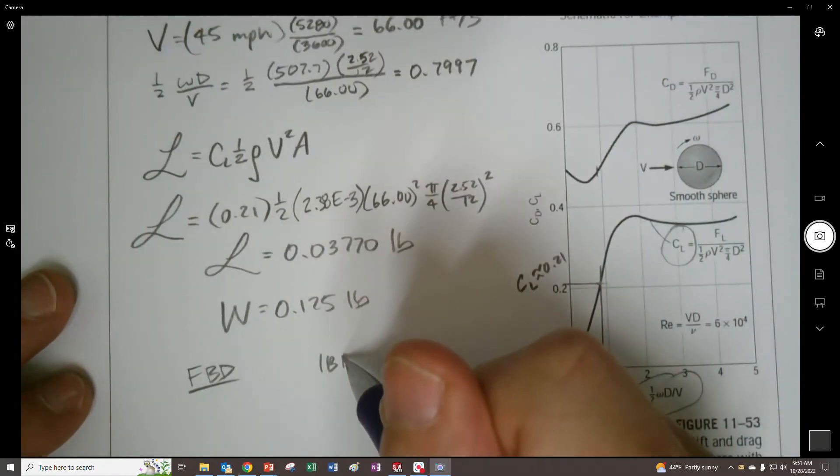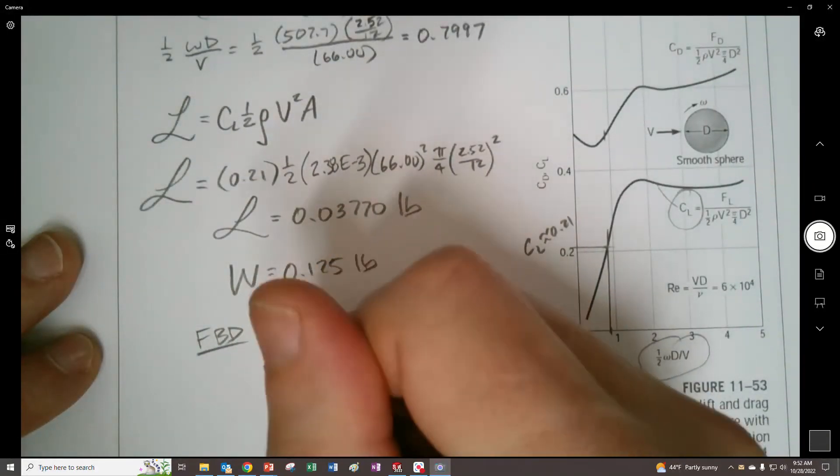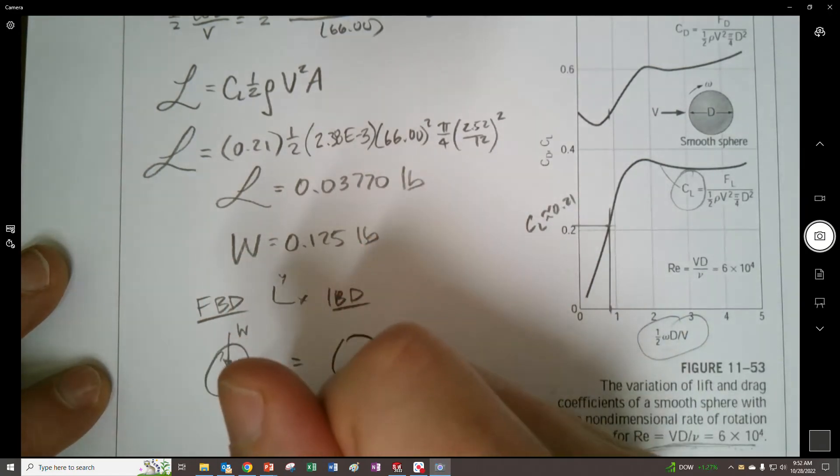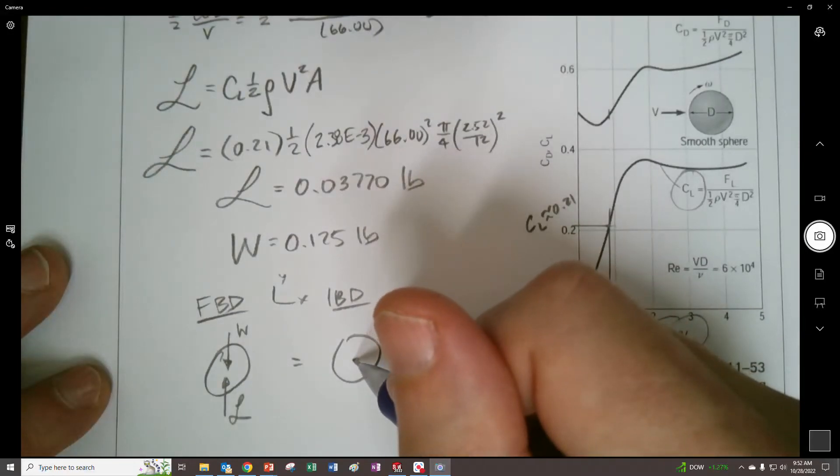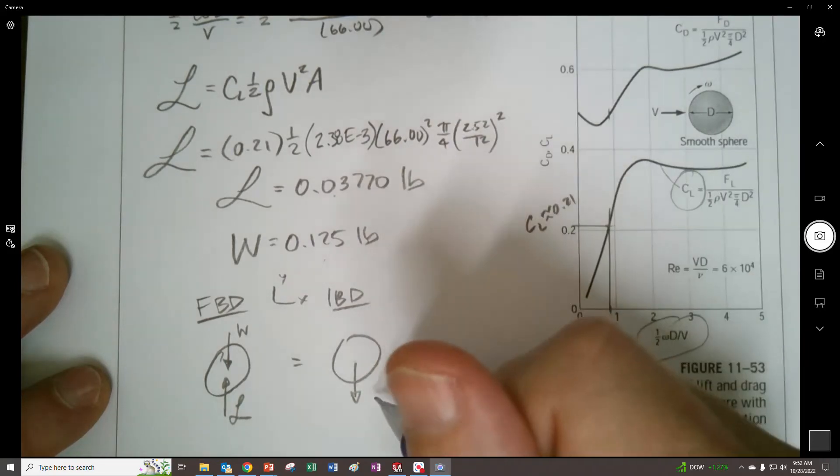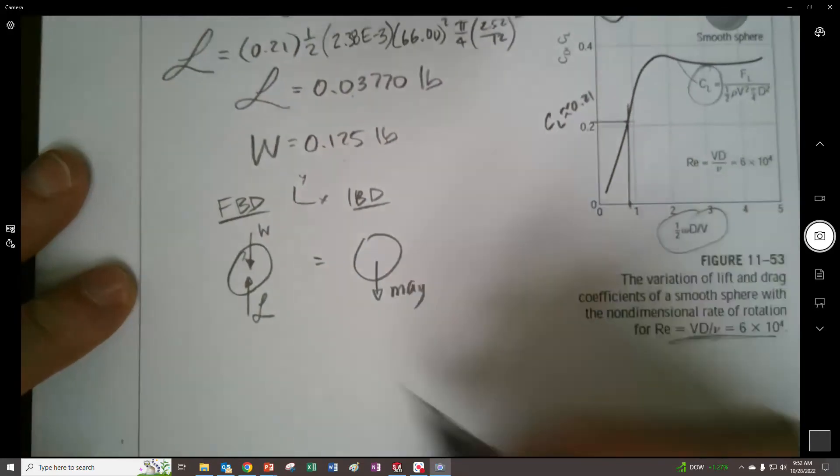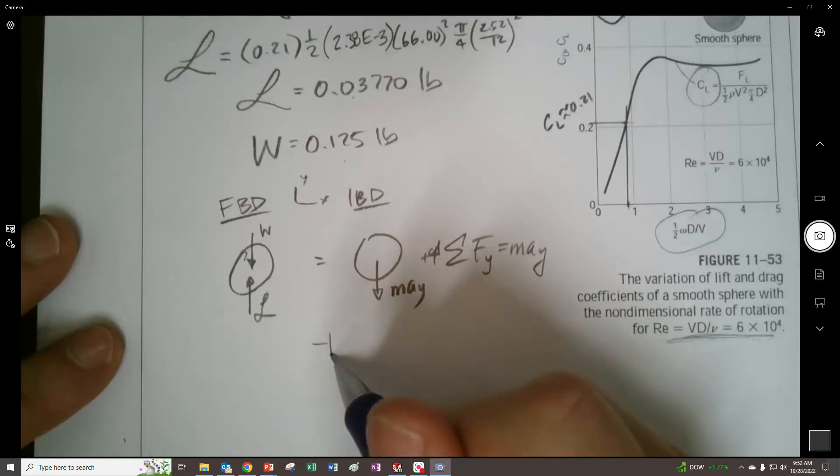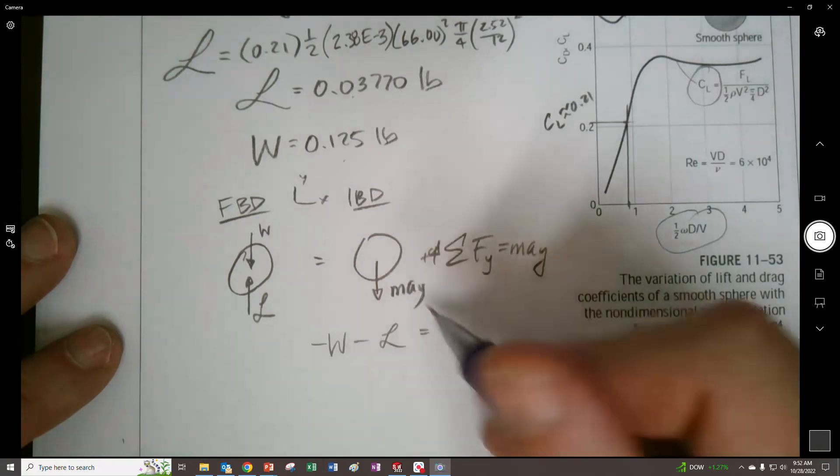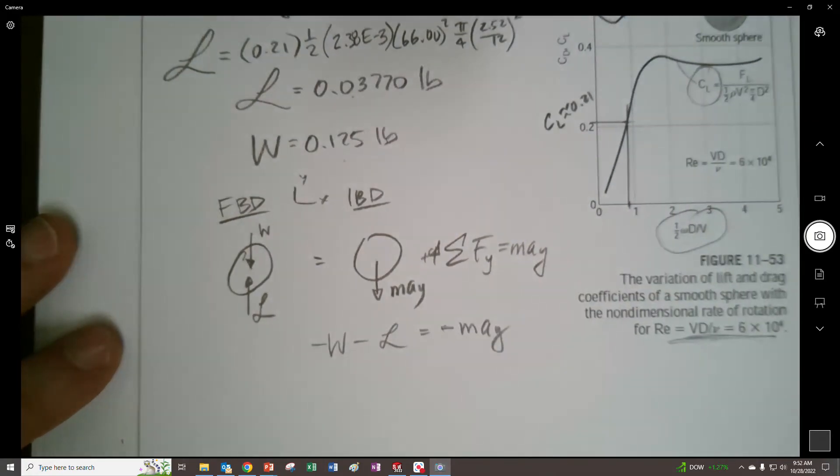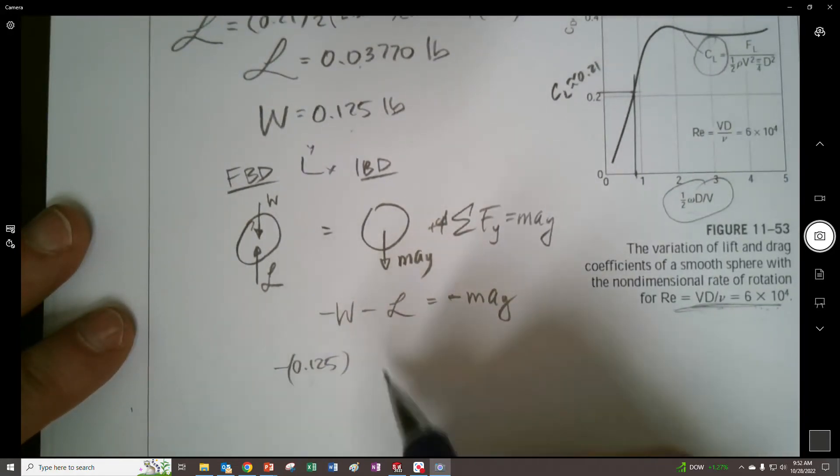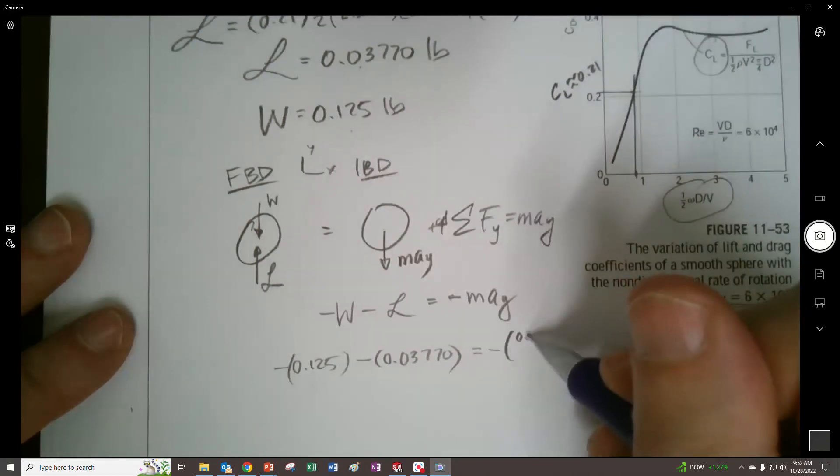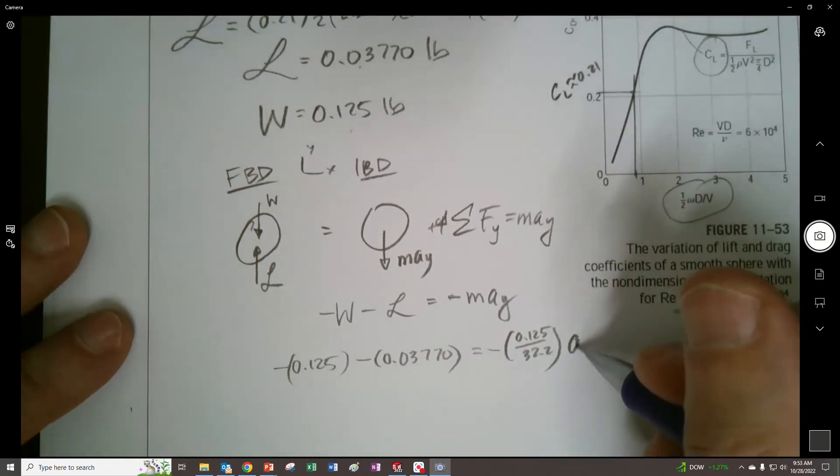But here to do this, I think we need to address the dynamics, so let's use an FBD and an IBD. Even though this is a simple problem, this helps us think our way through. We have a weight acting down, we have lift acting up, and then we also have an acceleration. Because this is less than that, this is going to be the direction of acceleration in the y direction. Taking the sum of the forces in the y direction equals mass times acceleration in the y direction. We'll treat positive as up, we'll say negative weight minus lift equals negative mass times acceleration. So the weight is 0.125, the lift is 0.03770, and the mass is 0.125 divided by 32.2. That will give us slugs and we can figure out what the acceleration is.